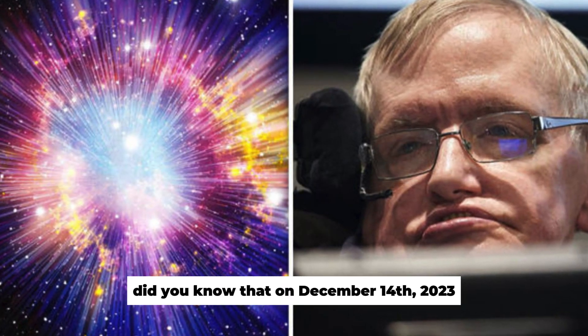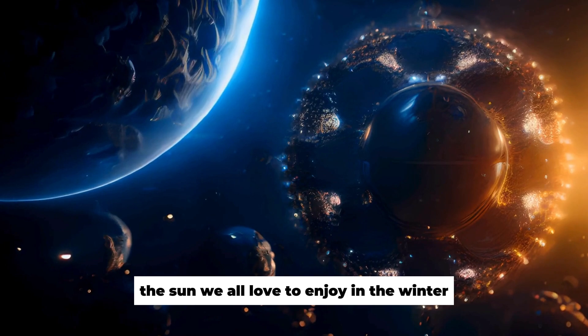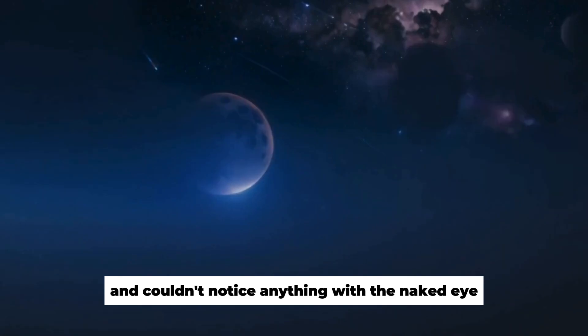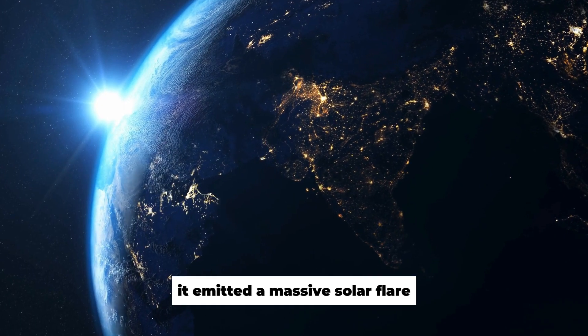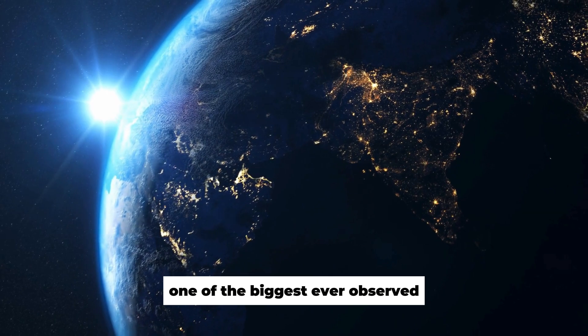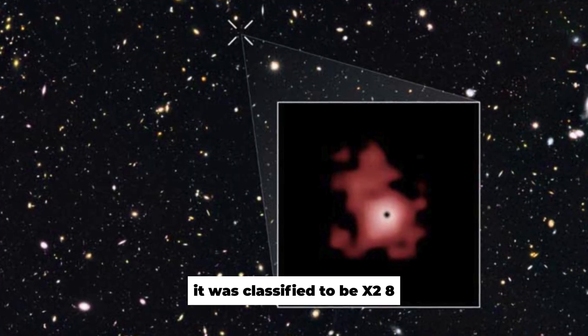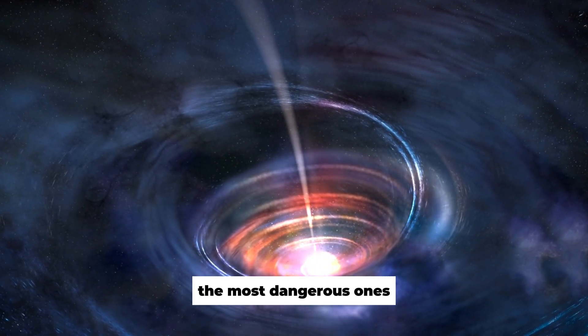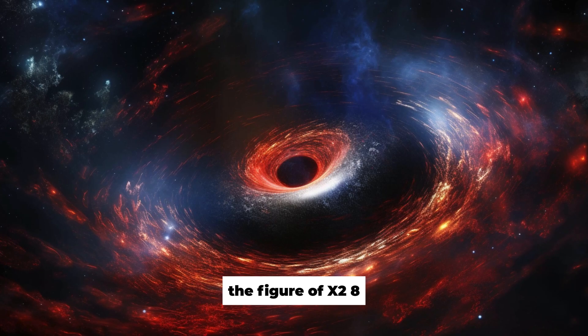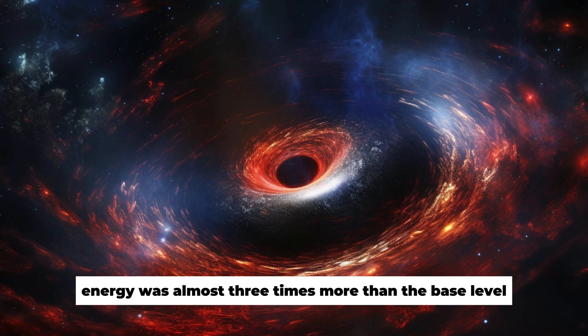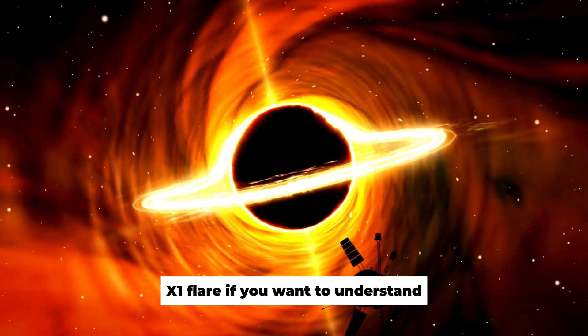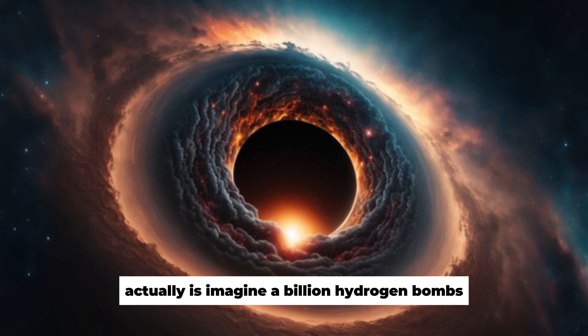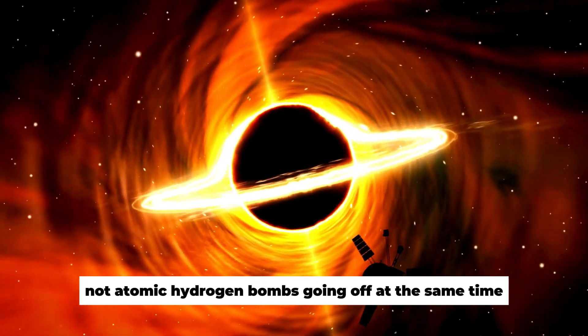Did you know that on December 14th, 2023, the sun we all love to enjoy in the winter experienced a major solar event? While we were on Earth and couldn't notice anything with the naked eye, it emitted a massive solar flare, one of the biggest ever observed. It was classified to be X2.8, and just to remind you, X-Class is only given to the solar flares that are the most dangerous ones. The figure of X2.8 means that the solar flare's energy was almost three times more than the base level X1 flare. If you want to understand how dangerous this solar flare actually is, imagine a billion hydrogen bombs, not atomic hydrogen bombs, going off at the same time.